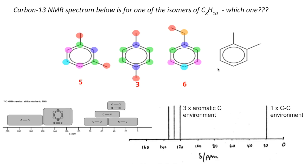Finally, the last isomer has a line of symmetry running this way. Applying it, all equivalent carbons pair up, giving four environments in total: one carbon-to-carbon environment and three aromatic carbon environments — which matches the spectrum exactly. So that's the answer.